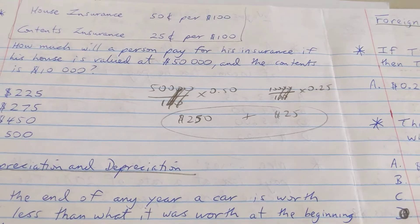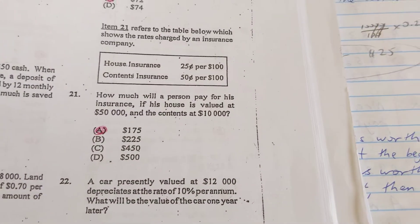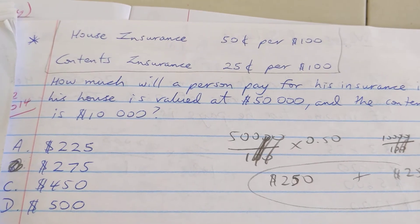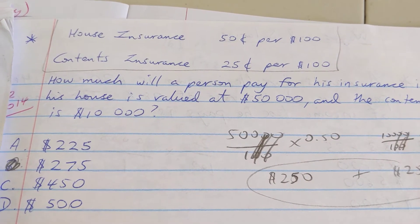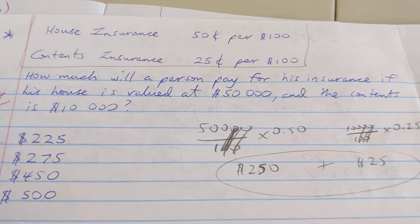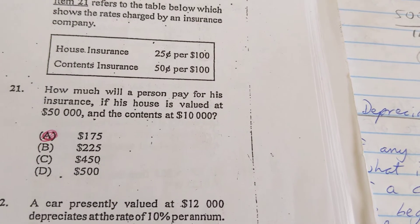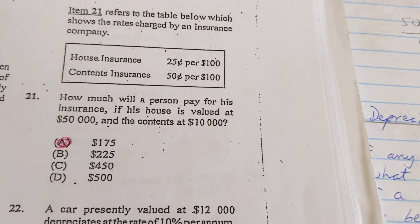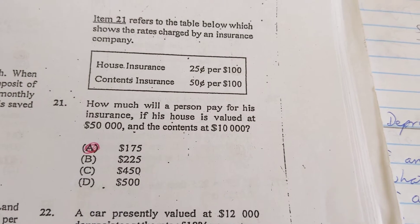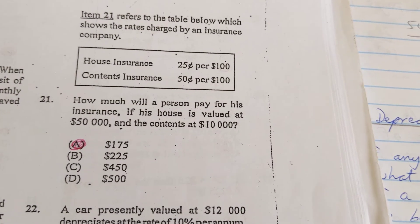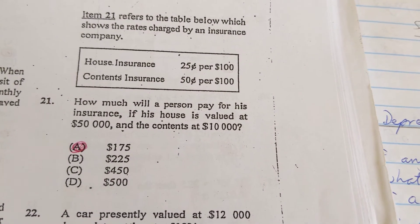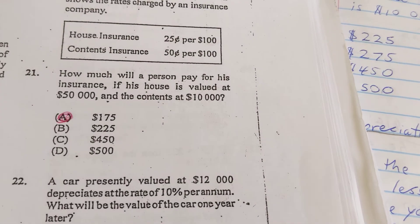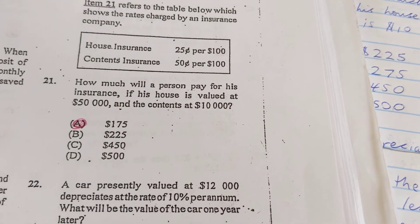Now I'll pull up January 2014 — it looks like the exact same question, but it's not. They've switched the house insurance price and the contents insurance price. Instead of paying 50 cents per hundred for the house and 25 cents for the contents, it's now 25 cents for the house and 50 cents for the contents — giving a different answer. CXC tends to change it up a little because they know the papers are in circulation. They add these slight variations to catch students who just rehearse the answer without actually working through the question.